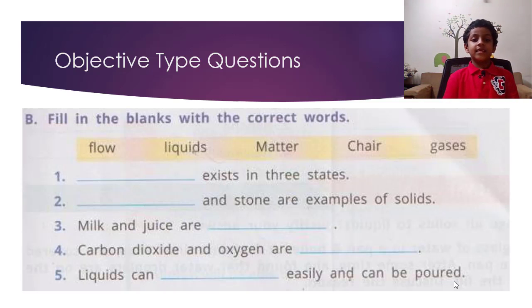B. Fill in the blanks with the correct words. First, matter exists in three states. Second, chair and stone are examples of solids. Milk and juice are liquids. Carbon dioxide and oxygen are gases. Liquids can flow easily and can be poured.